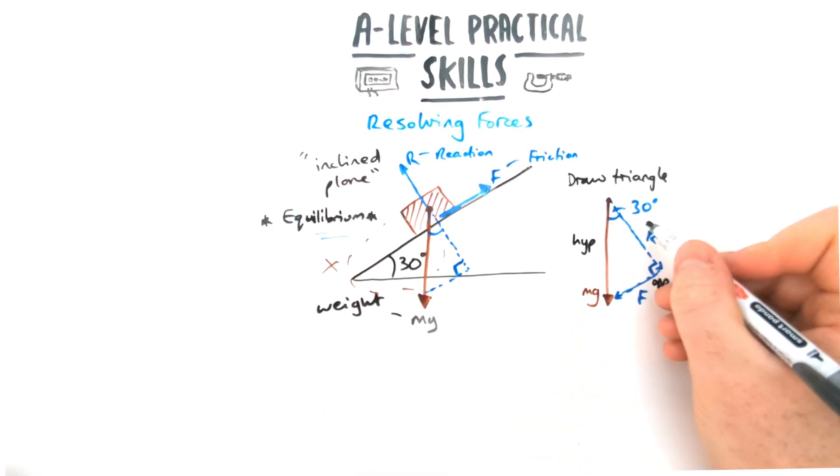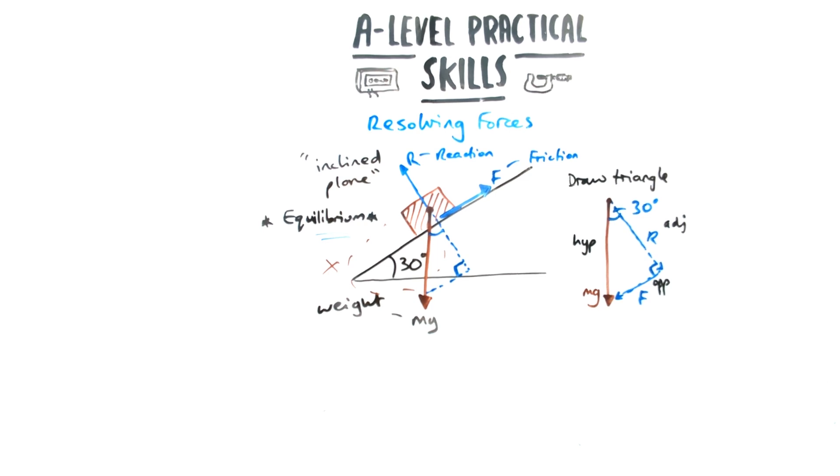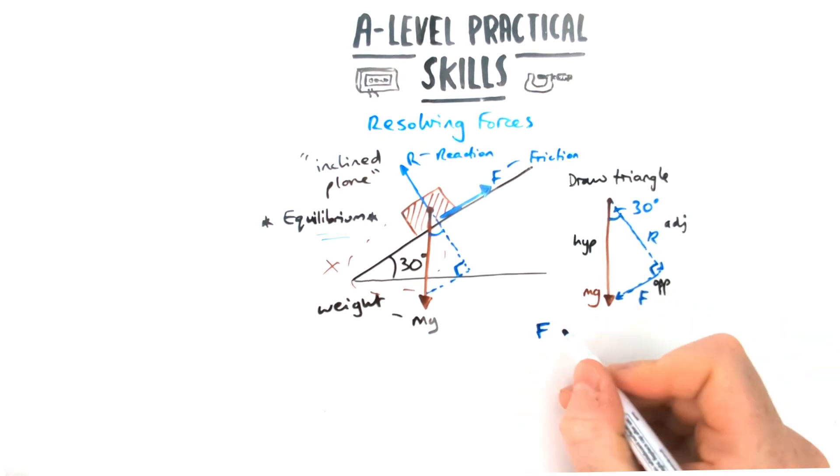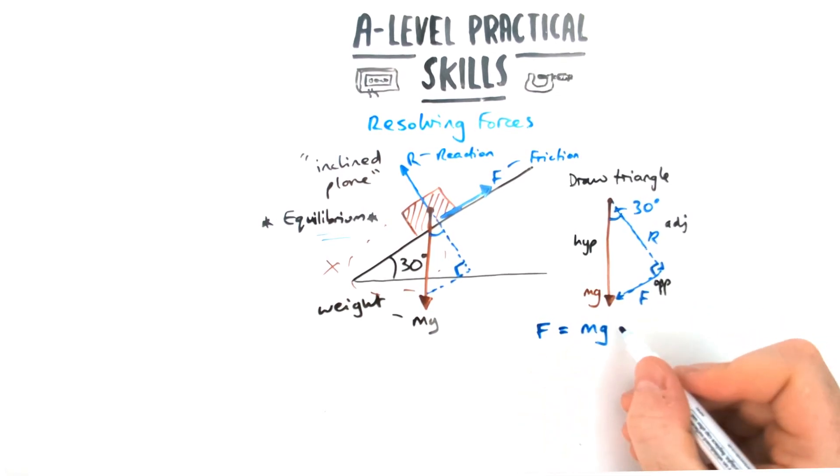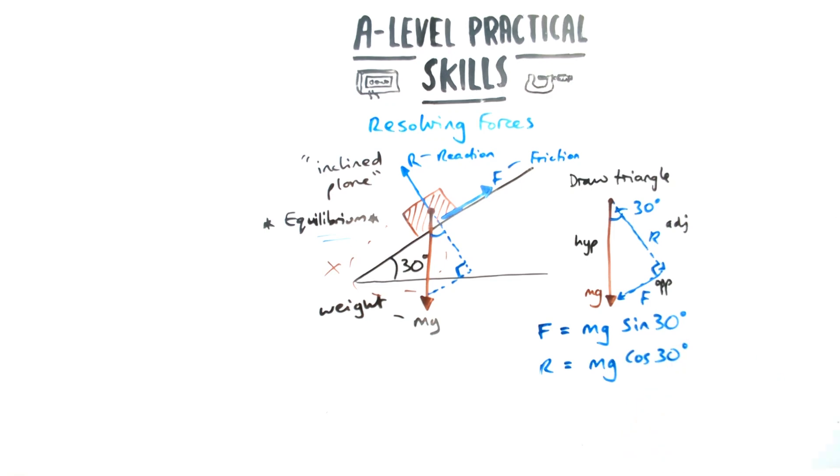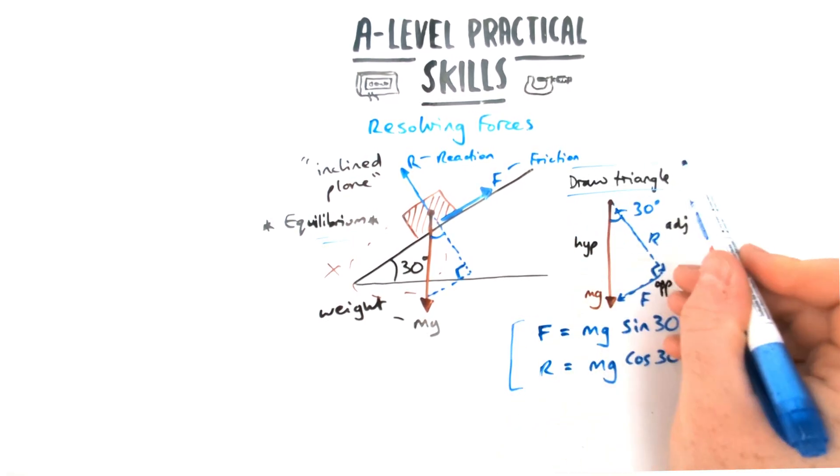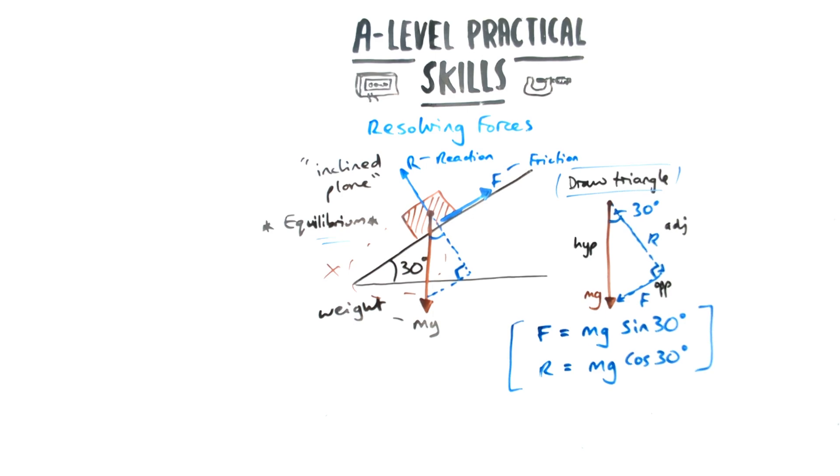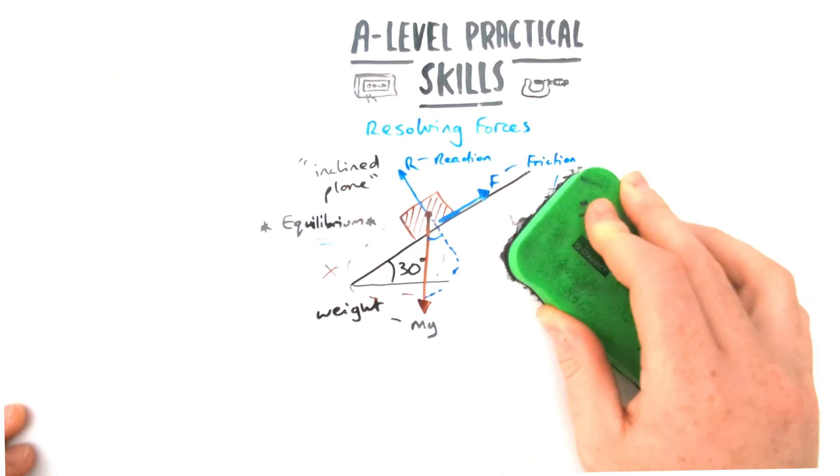Now I can work out what these extra components are because I know what the weight is. I haven't given it numbers this time. I'm just going to leave it as mg. I'm going to try and find out what the adjacent and hypotenuse are. First thing is friction. That's acting up the slope. That's my opposite. Opposite, Sokotoa means it's going to be sine, mg sine 30. And the reaction going perpendicular to the slope is going to be mg cos 30. So I've drawn the triangle and I've found general expressions for those terms.